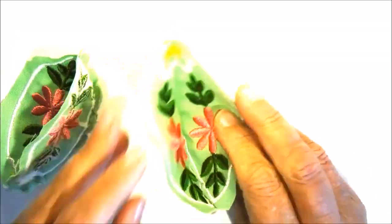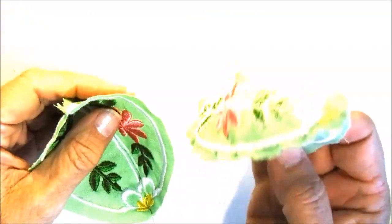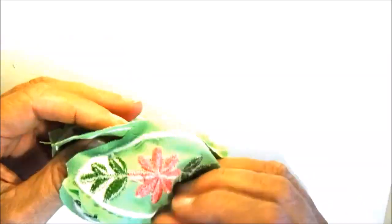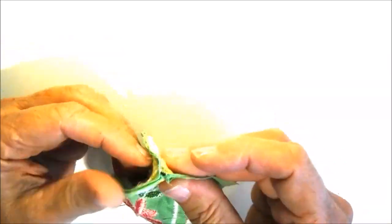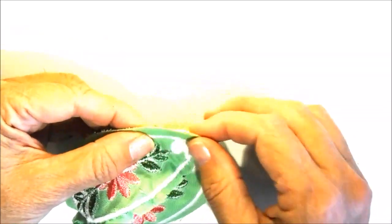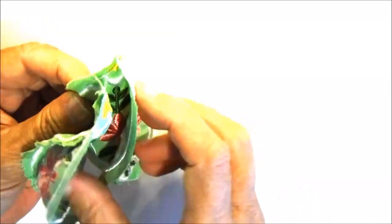Now we'll place the two halves together and we'll sew around the outer edge, but we'll leave an opening about an inch and a half to two inches wide so that we can turn it right side out and stuff it.